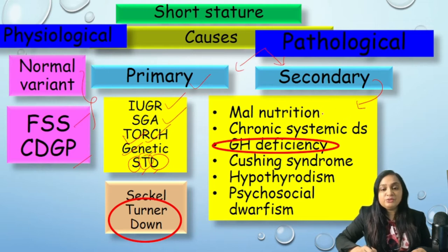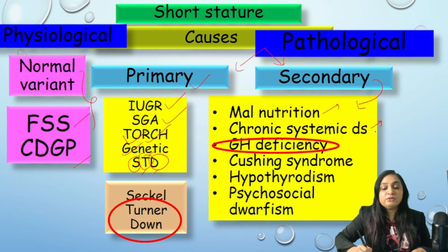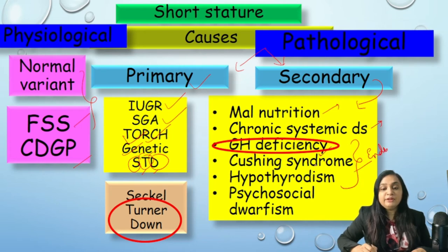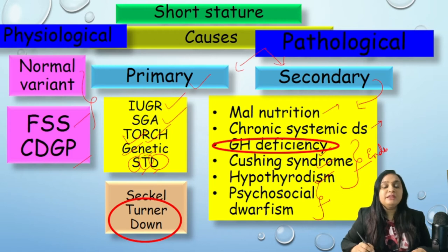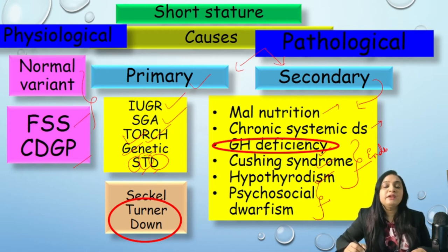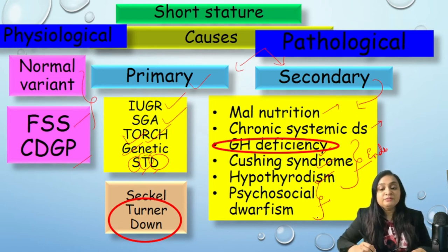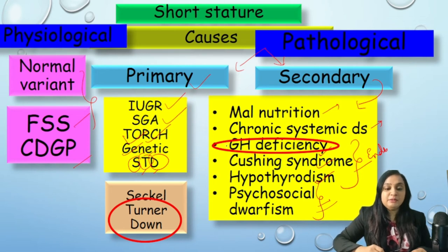Secondary causes are all acquired after birth: malnutrition, chronic systemic diseases such as celiac disease and chronic renal disease. Three important endocrine causes are growth hormone deficiency, Cushing syndrome, and hypothyroidism. Last but not least is psychosocial dwarfism — when the child is not getting enough tender loving care, maternal deprivation, or the child is coming from an orphanage. GH deficiency is a very important entity to keep in mind.